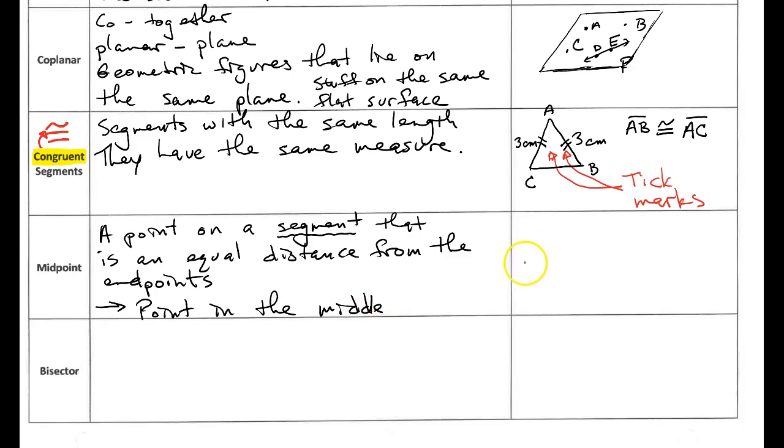So let's draw a picture. So here's A and here's B and we'll put this point in here. We'll call it M for midpoint. And I'm going to put some tick marks here.